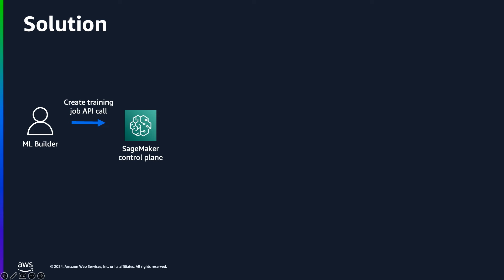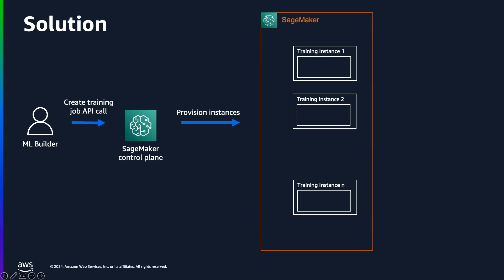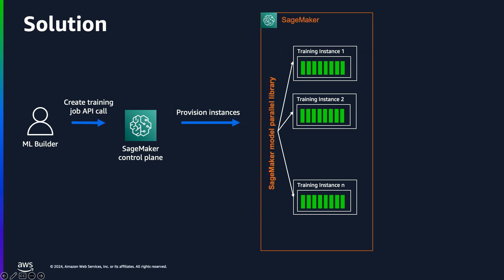As a machine learning engineer, I will make API calls to the SageMaker control plane. SageMaker will help provision a cluster with N nodes. We'll use the SageMaker model parallel library and its expert parallelism implementation to split the experts across multiple GPUs.